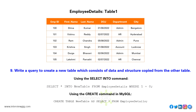Write a query to create a new table which consists of data and structure copied from another table. Using SELECT INTO command: SELECT * INTO newtable FROM employee_details WHERE 1 = 0. Using CREATE command in MySQL: CREATE TABLE newtable AS SELECT * FROM employee_details.